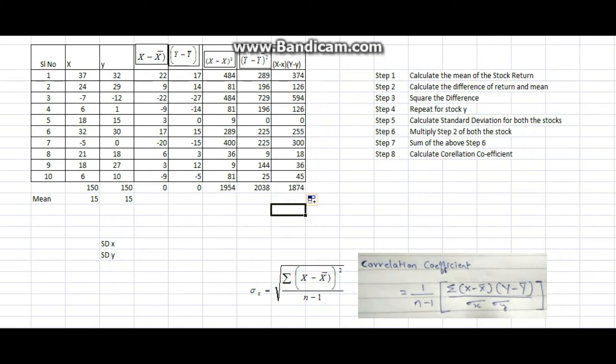The formula is X minus X bar whole square divided by number of observations minus one, square root of that will get standard deviation. So I open bracket, X minus X bar whole square.